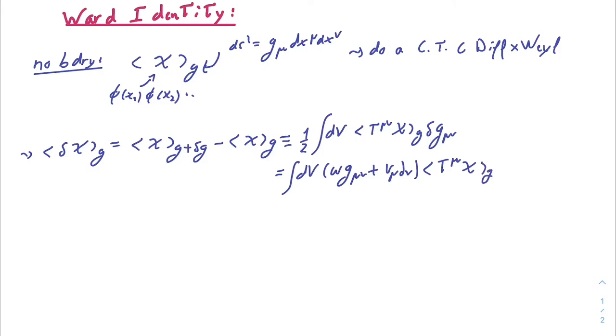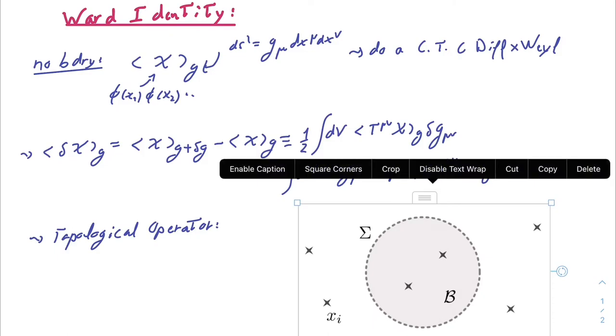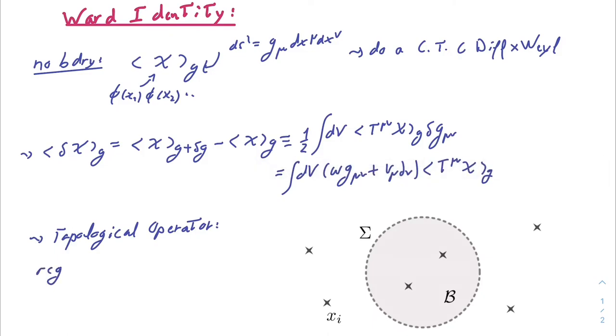If we want to only perform a transformation on a subset of the insertion points, we can do so by using a topological operator. The idea is that we will have an operator which will live on some surface sigma which encloses a region B, and we will perform a conformal transformation on all of the insertion points which are inside B. And the idea is to look at this surface integral of the stress tensor which depends on a conformal scaling vector.